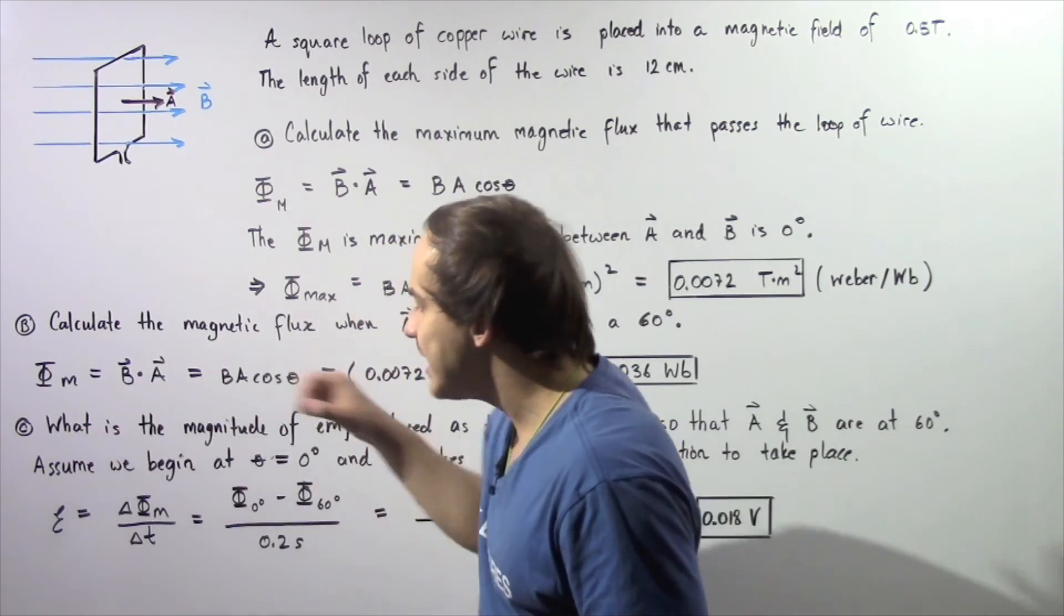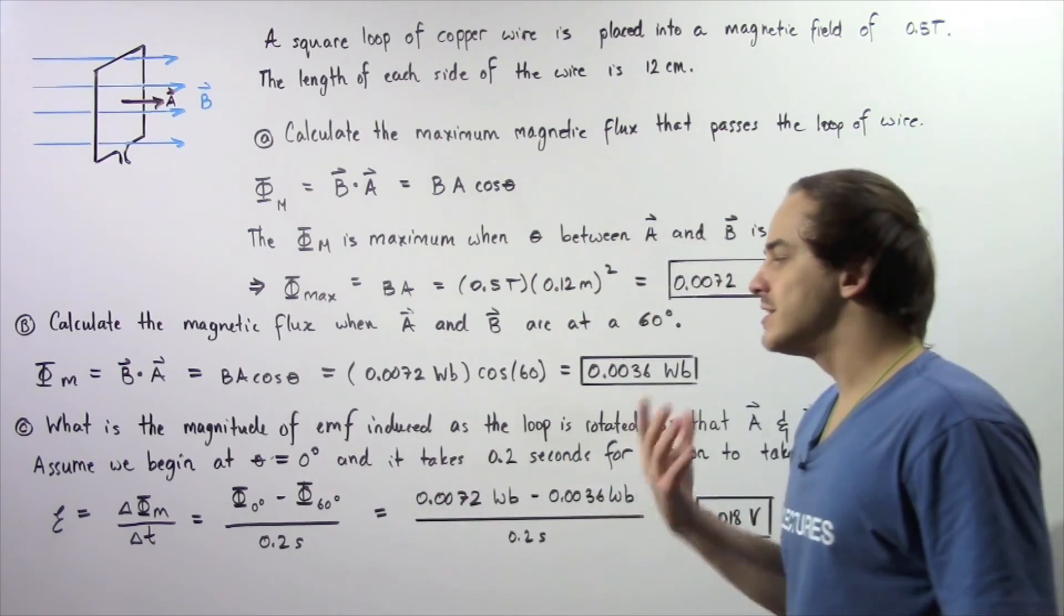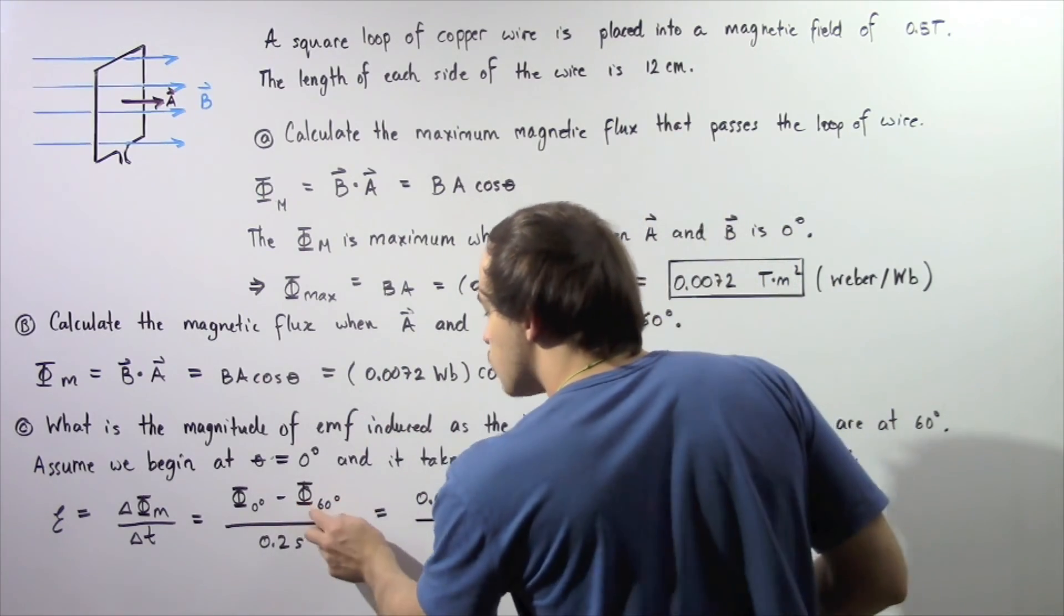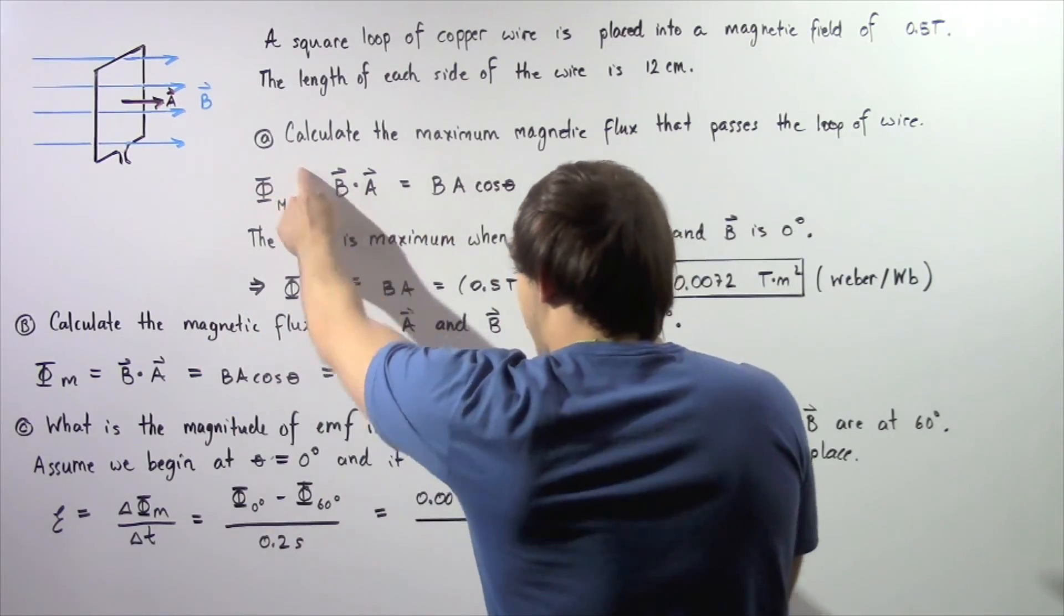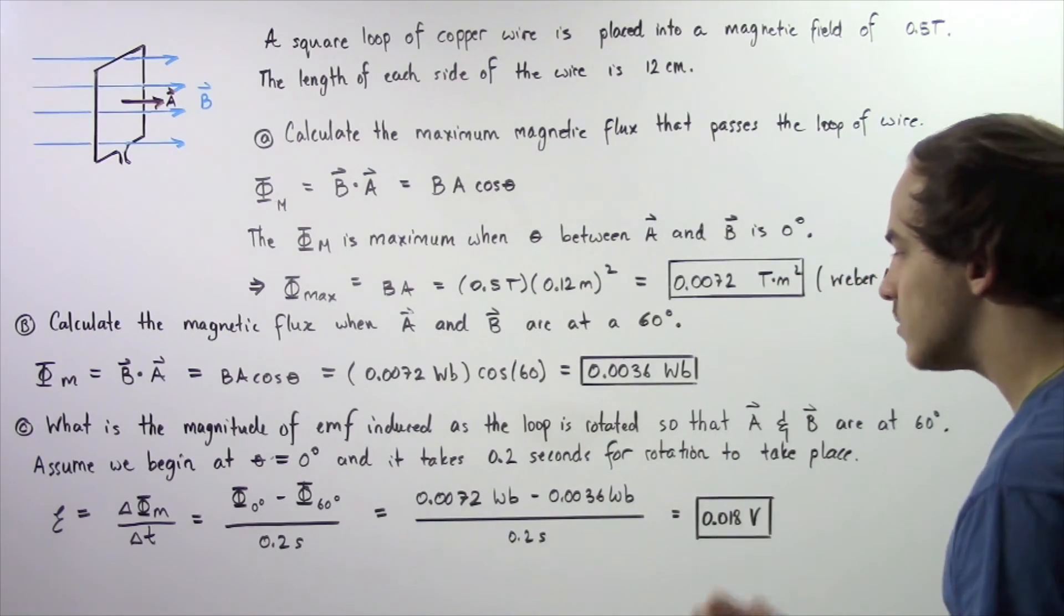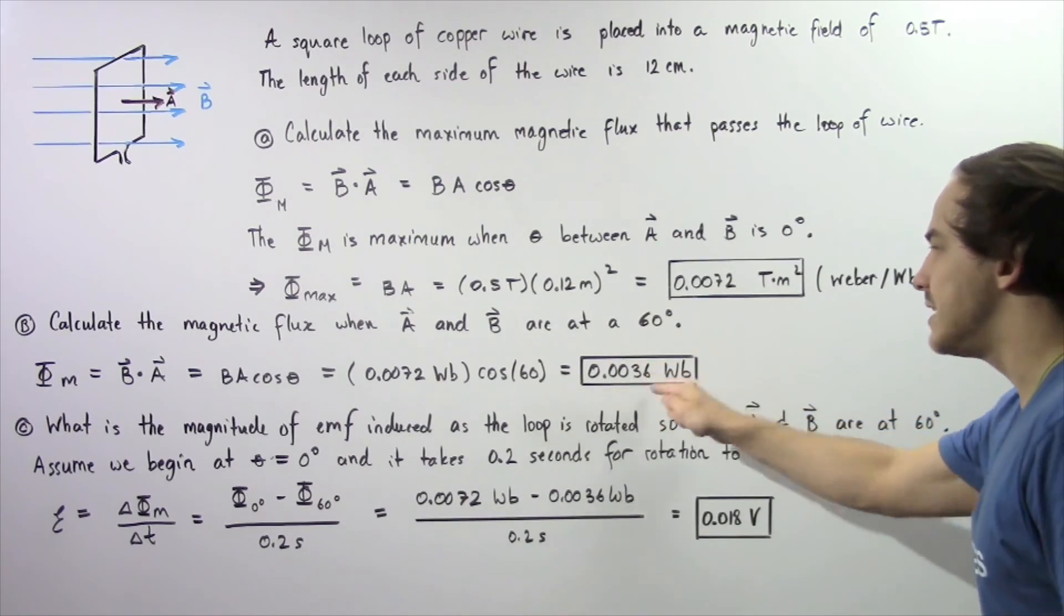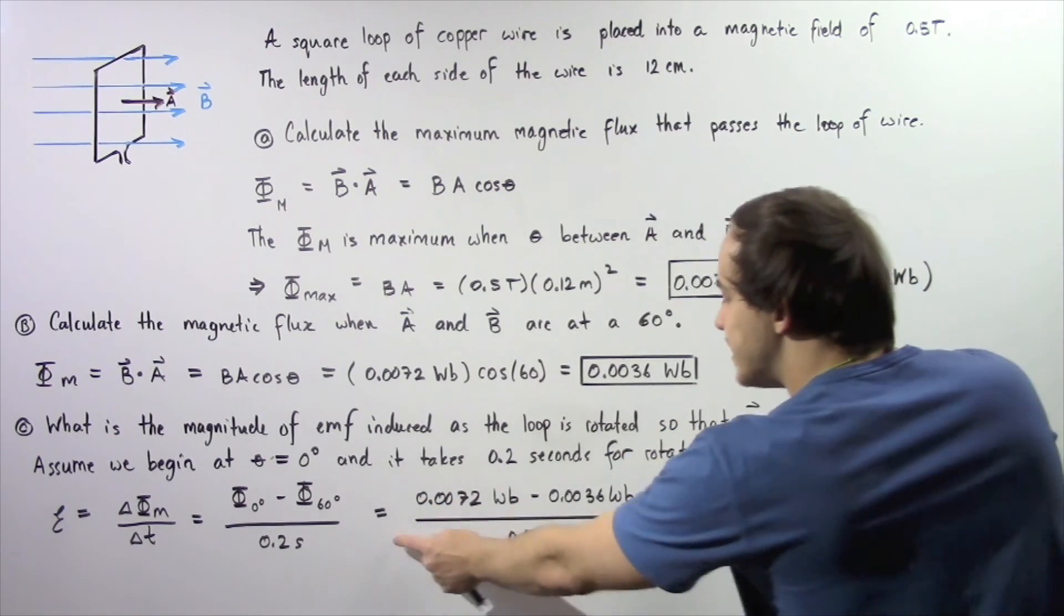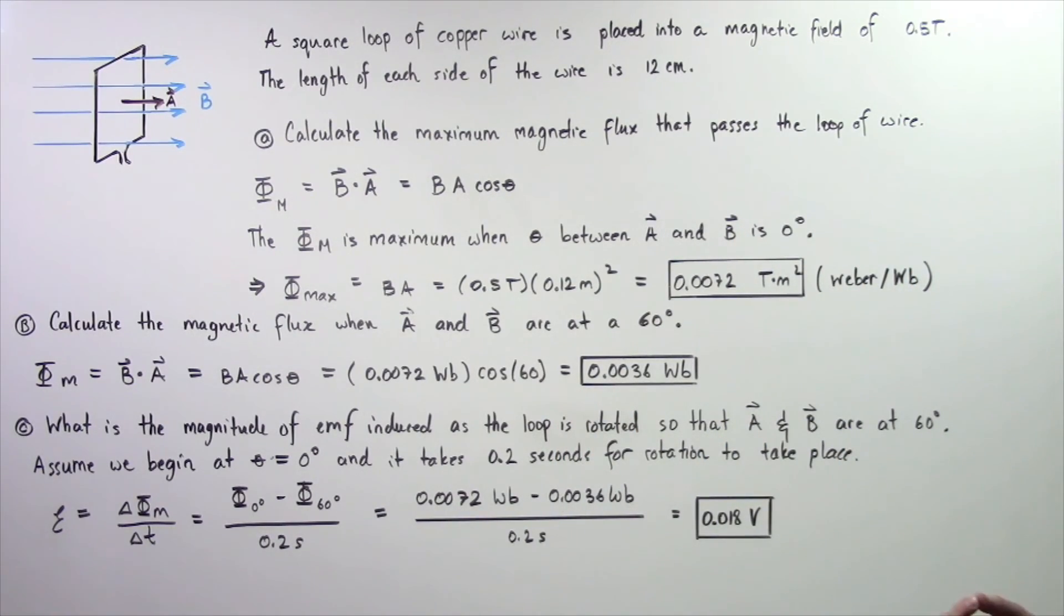So to find the quantity of EMF induced, we simply take the change in magnetic flux and divide that by the time it takes for that change to take place. So we essentially begin at the zero degree measure and we go to our 60 degree measure. So this quantity was calculated in part A and it's equal to 0.0072 Webers. And this quantity is 0.0036 Webers, which was calculated in part B. So we subtract the two and we divide by 0.2 seconds, and that gives us a voltage or EMF of 0.018 volts.